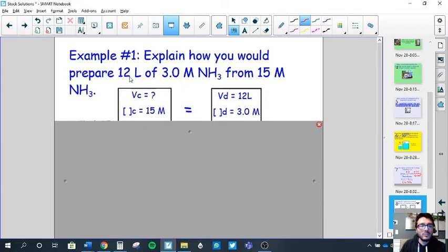A couple of examples. First, explain how you would prepare 12 liters of a 3 molar concentration of ammonia from a 15 molar concentration of ammonia. So write down what you're given. We need to figure out what volume of the concentrated solution we need to make the more dilute solution. Information that's given to us is that we know the concentration is at 15 molar. We want 12 diluted liters of it at a much lesser concentration, a 3 molar concentration.